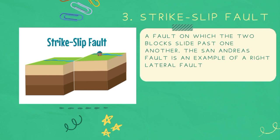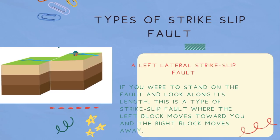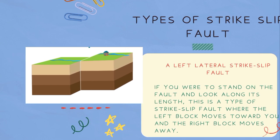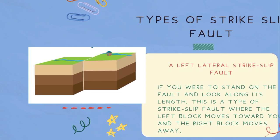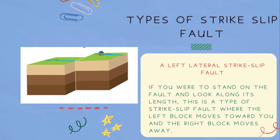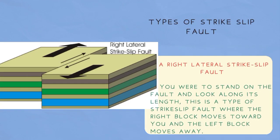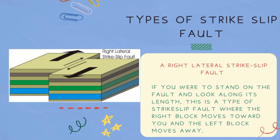Strike-slip fault — a fault on which the two blocks slide past one another. The San Andreas fault is an example of a right-lateral fault. There are two types of strike-slip faults. A left-lateral strike-slip fault: if you were to stand on the fault and look along its length, the left block moves toward you and the right block moves away. A right-lateral strike-slip fault: the right block moves toward you and the left block moves away.